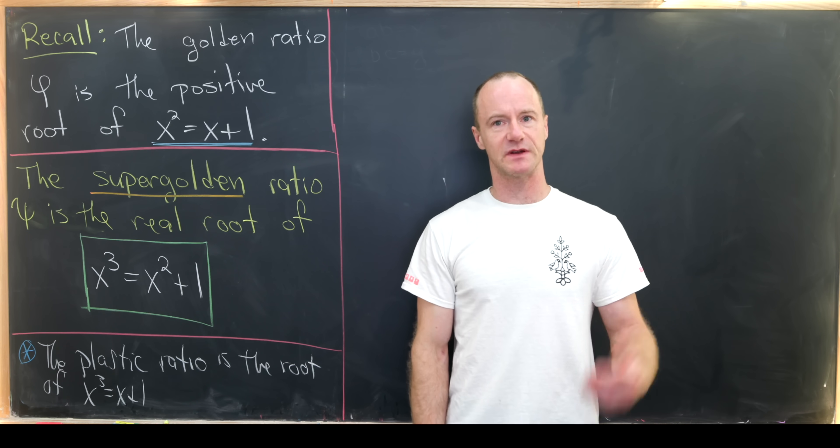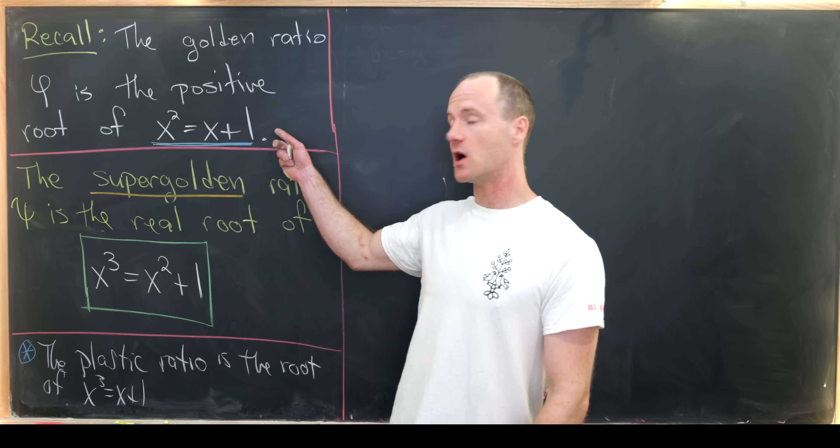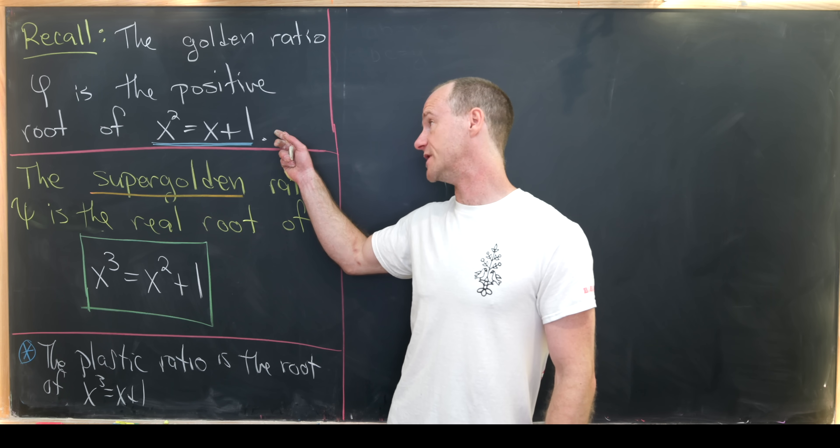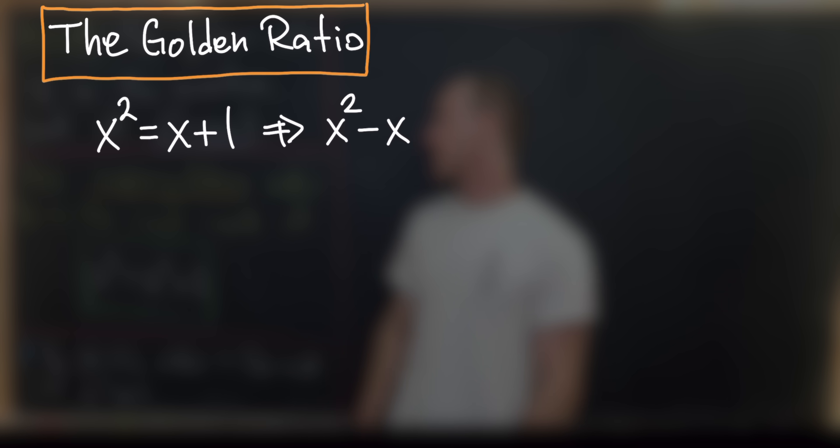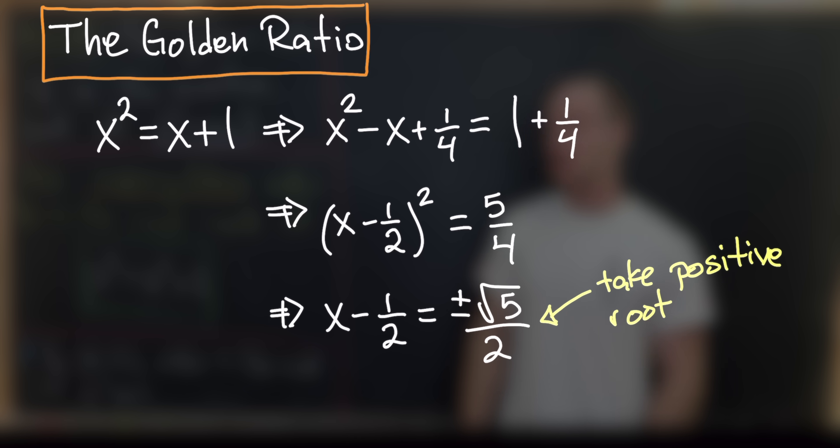Let's maybe start by recalling what the golden ratio is. The golden ratio, which is sometimes called phi, is the positive root to the following quadratic polynomial equation. We have x squared equals x plus 1. And you can solve that, and that's pretty easy to solve using the quadratic formula or by completing the square. And you'll get 1 plus the square root of 5 over 2.